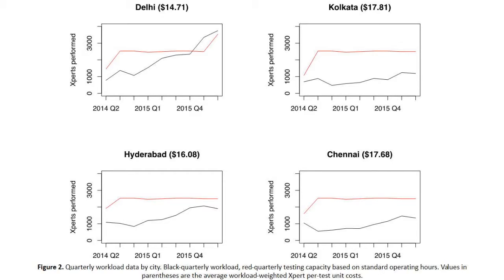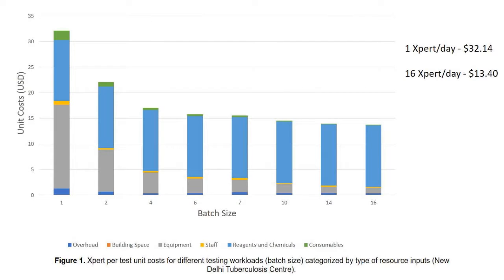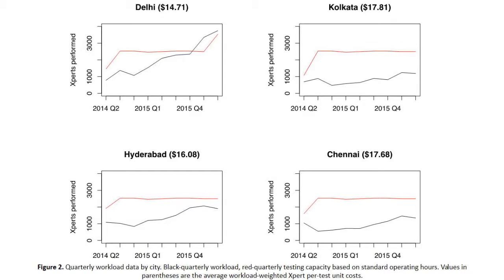Figures show quarterly test volumes in black and theoretical full capacity in red. Cities like Delhi and Hyderabad were close to or exceeding their theoretical eight-hour capacity — Delhi conducted overtime — giving slightly lower average per-test unit costs than Kolkata and Chennai where full capacity wasn't utilized. The difference between these average numbers and the theoretically most efficient price of $13.40 measures inefficiencies and unused capacity. Workload did increase over time, suggesting outreach activities were effective in encouraging patient referrals from physicians.